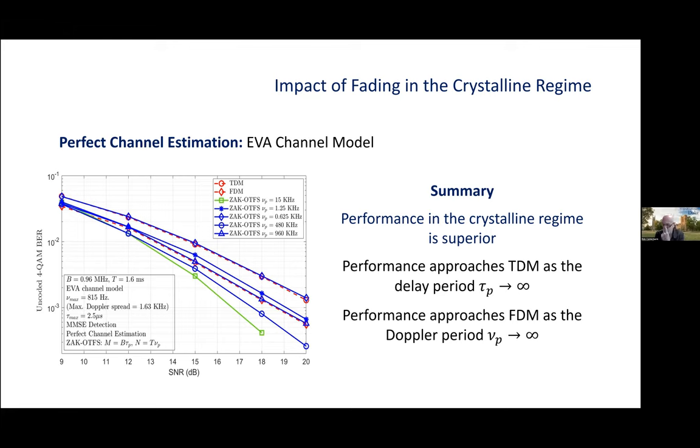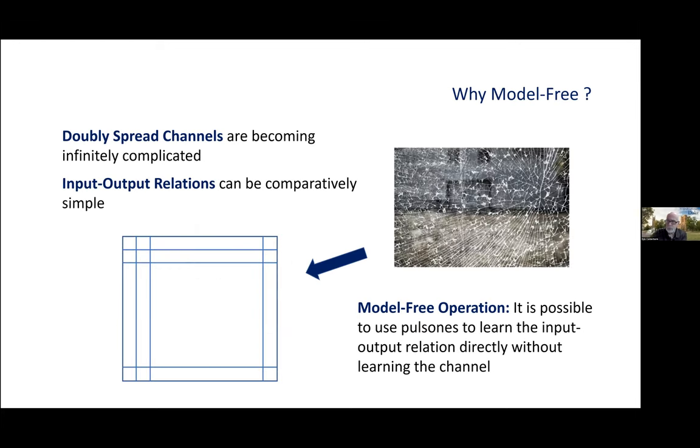Where nu_p is 15 kilohertz. We see the performance approaches TDM as the delay period grows. And that performance approaches FDM as the Doppler period grows. So, the red curves are TDM and FDM.